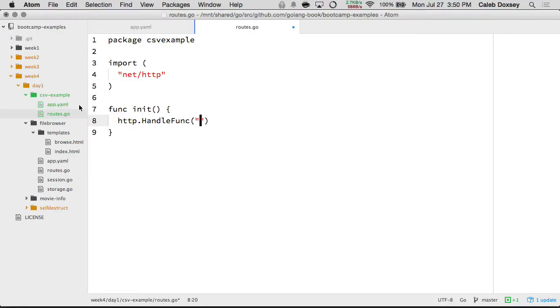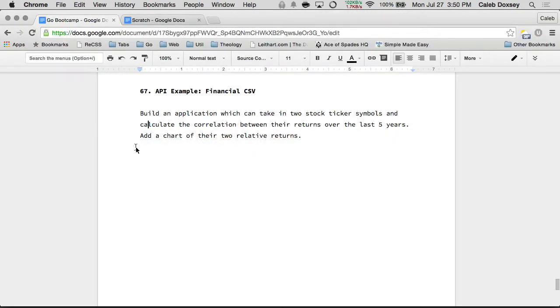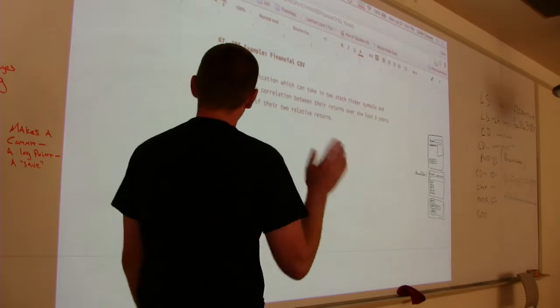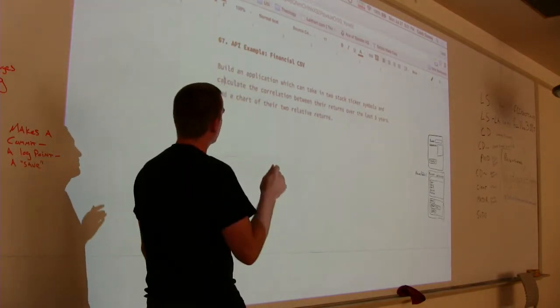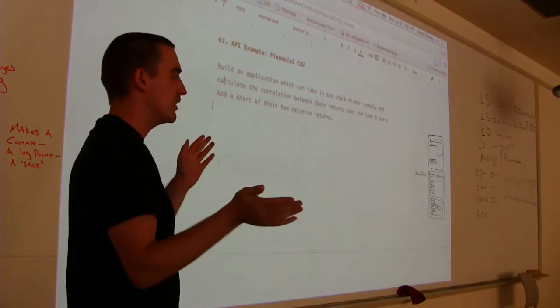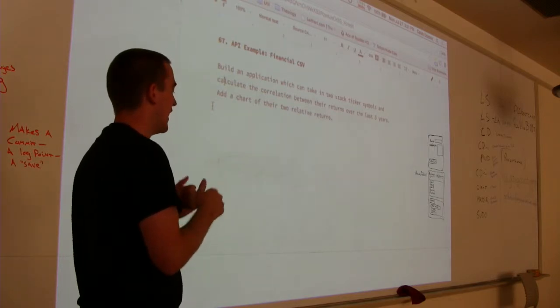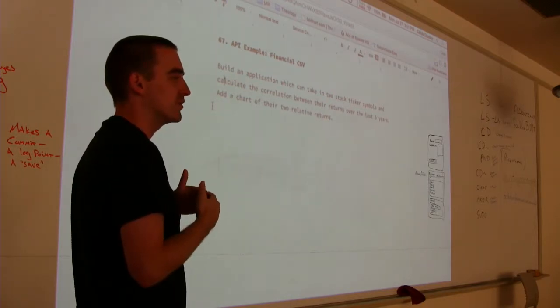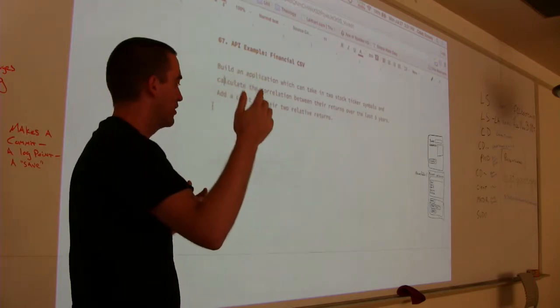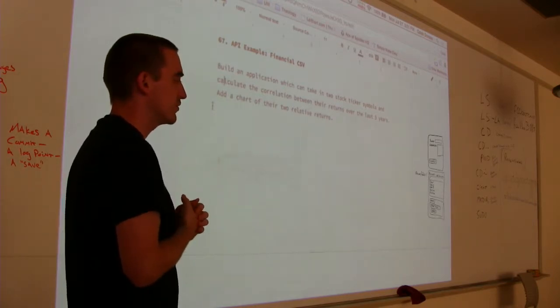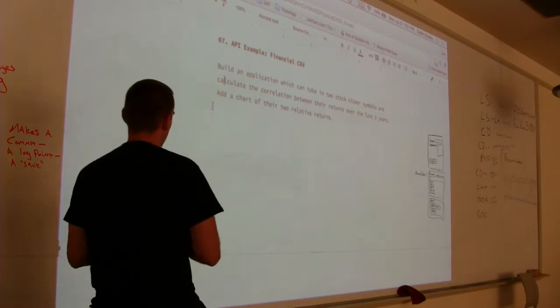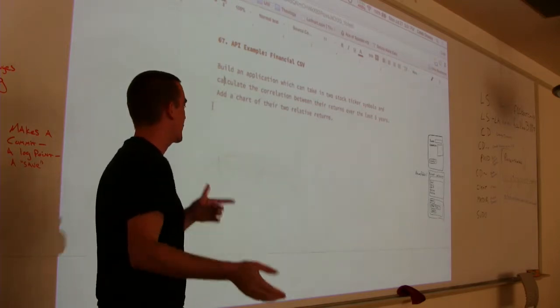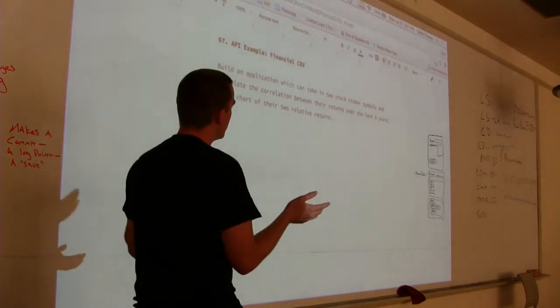And then you're going to have your handler. So HTTP handle func. And then your path and your functions. So let's think about what we want to do here. The outline says that we want an application which can take in two stock ticker symbols and calculate the correlation between the returns over the last five years. And then we want to chart. We'll do the chart later.